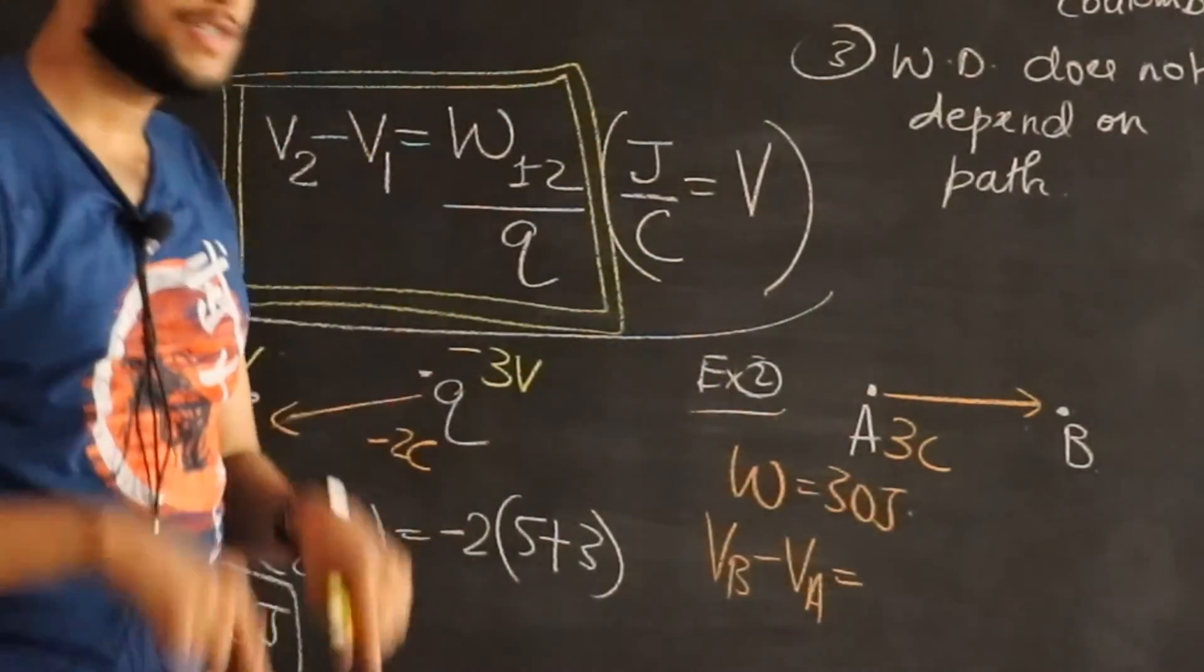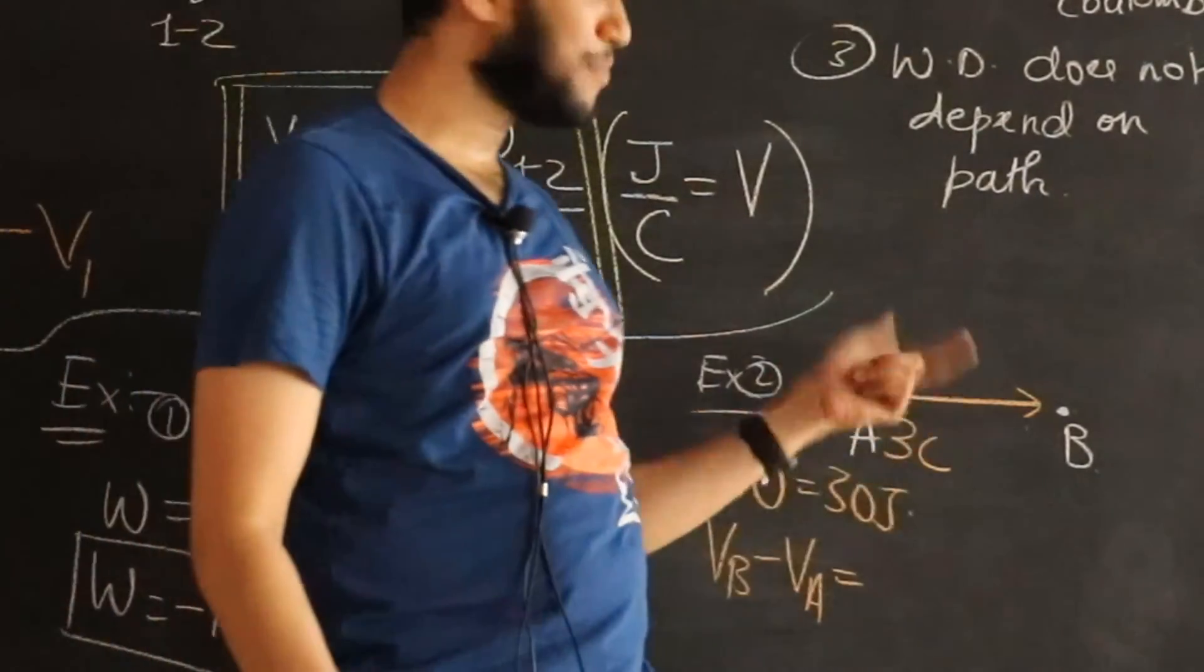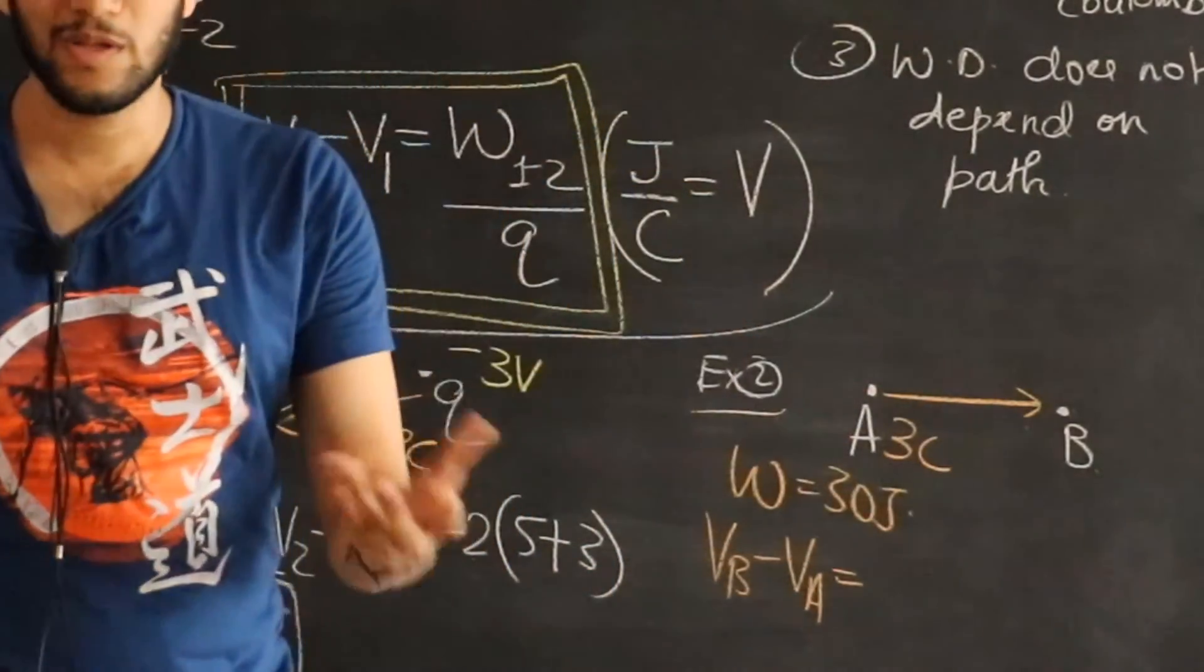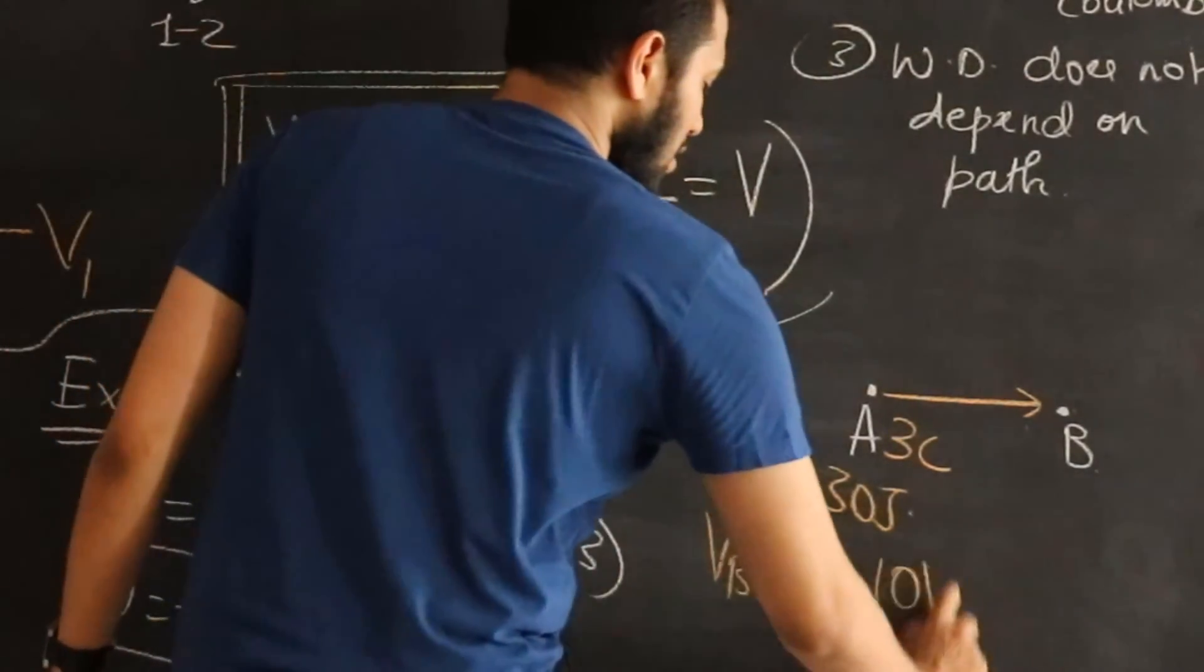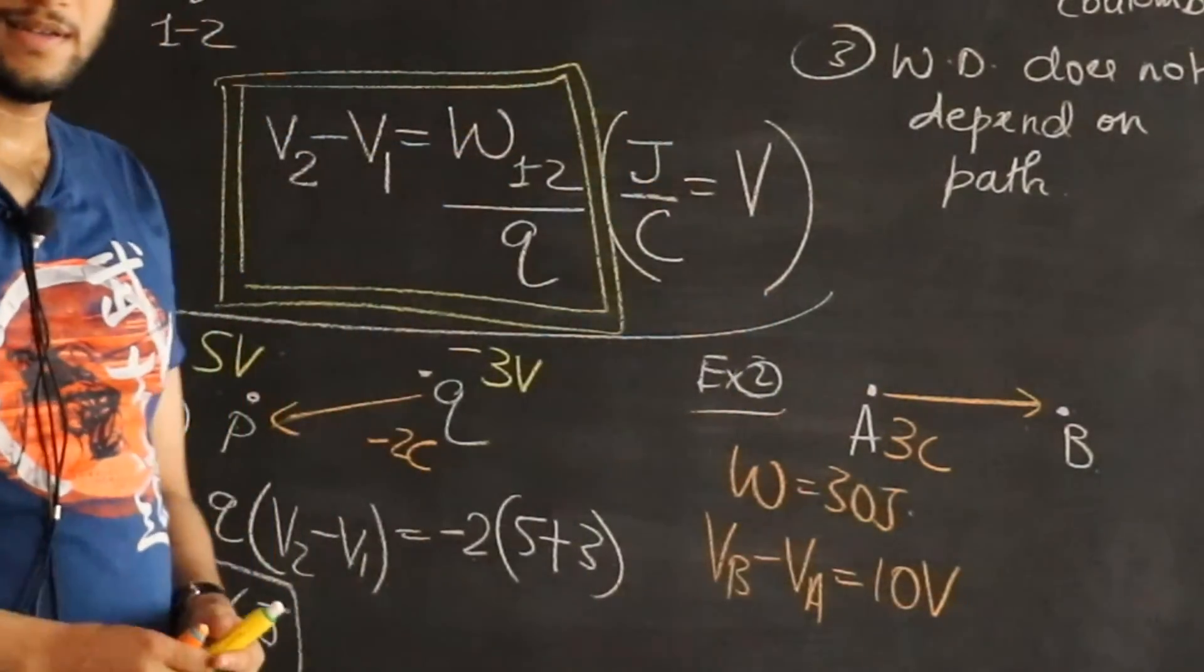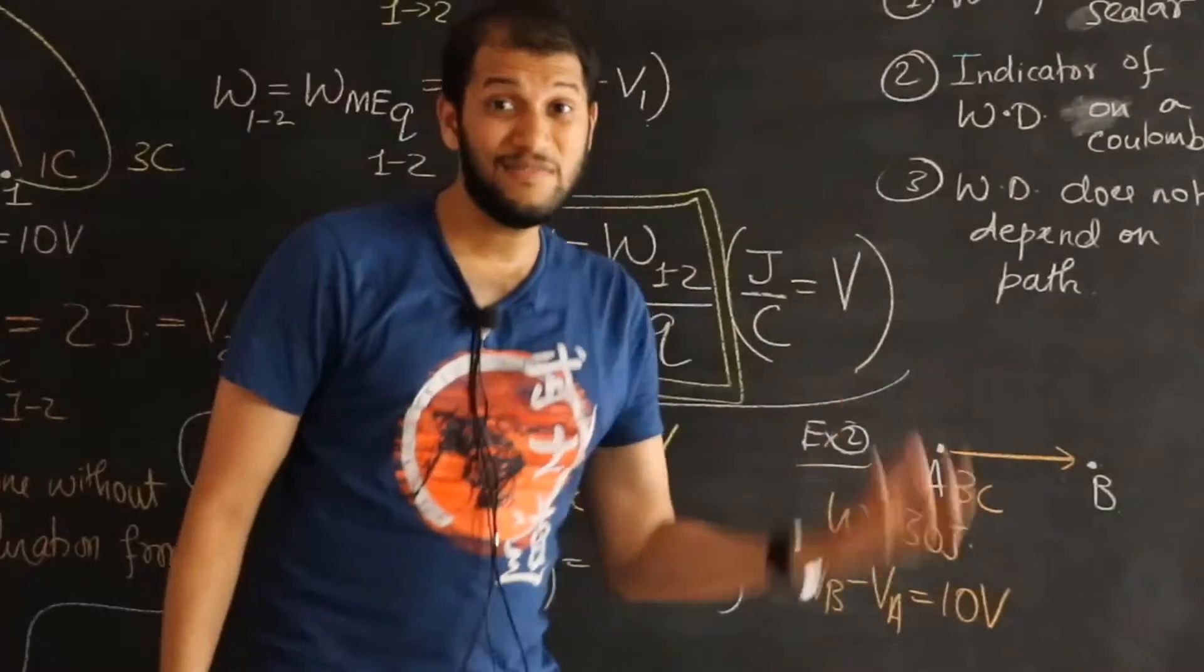Should be equal to work done per charge. Since I do 30 joules of work for 3 coulombs, per coulomb I must be doing 10 joules of work. So this is 10 joules per coulomb, which is 10 volts.